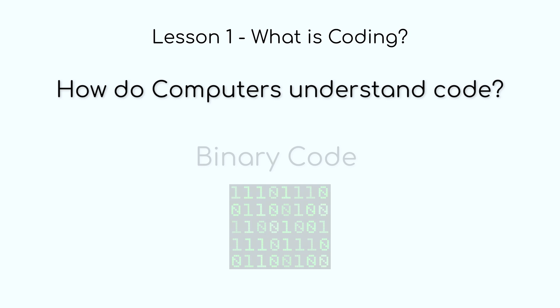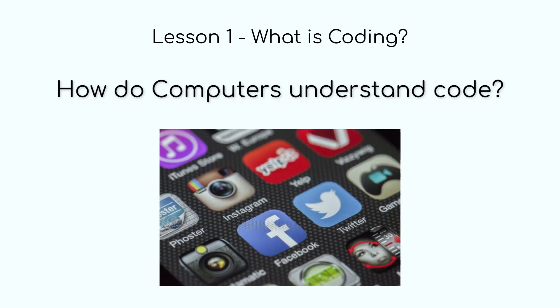Binary is a language made up of just two digits, one and zero, and everything in a computer, whether it's text, images, sounds, or even videos, is ultimately broken down into a combination of these ones and zeros. This is the foundation of how the computer processes everything.